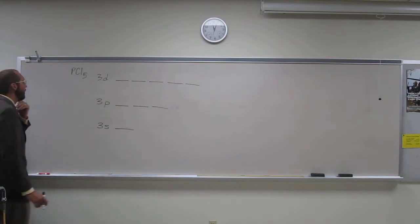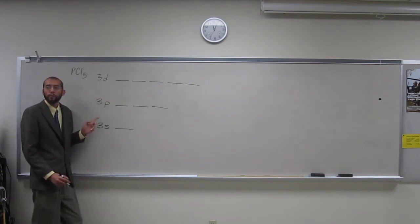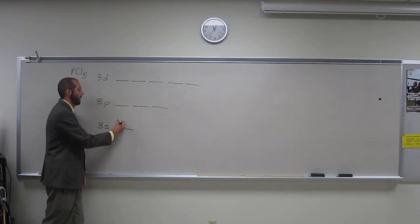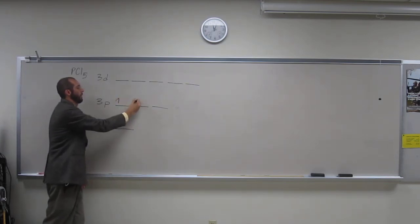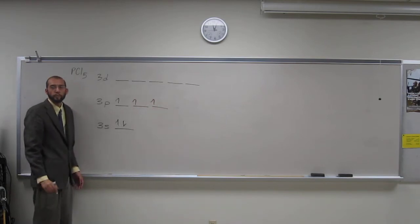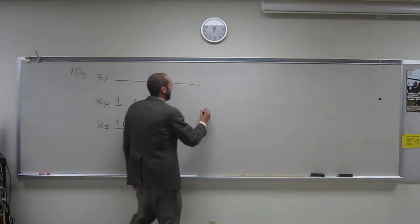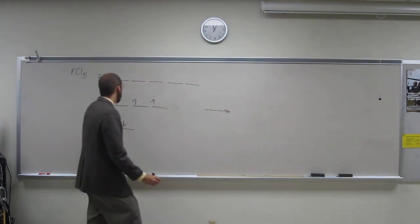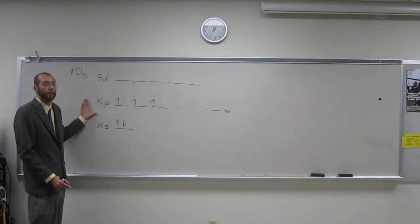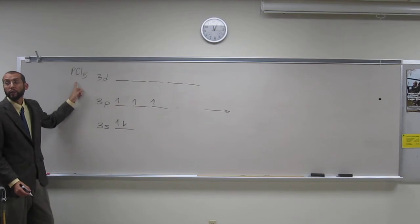Okay, so, how do we fill this up? So, again, when we promote the electrons, or when we hybridize, we're hybridizing with those d orbitals. So, of course, if we looked here, right, phosphorus should only be able to make 3 bonds. We know it makes 5, okay?